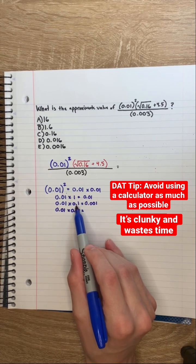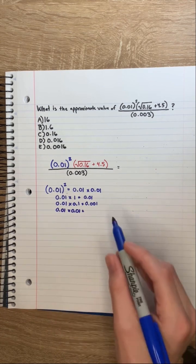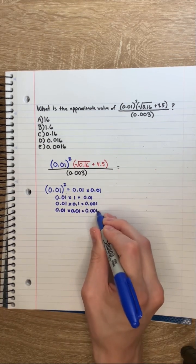And then finally, moving that decimal point over one more time to give us this 0.01 times 0.01, you get 0.0001.